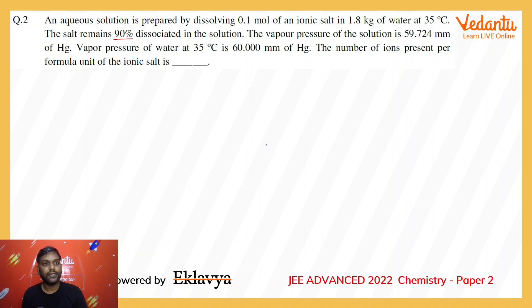The next question: An aqueous solution is prepared by dissolving 0.1 mole of an ionic salt in 1.8 kg of water. The salt remains 90% dissociated in the solution. The vapor pressure of the solution is 59.724 and the vapor pressure of water is 60. We have to calculate the number of ions present per formula unit of the ionic salt. Basically, we have to find the n value, the number of ions present in one formula unit of the salt.